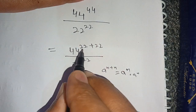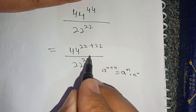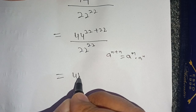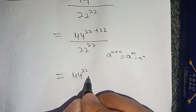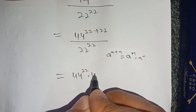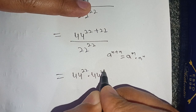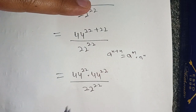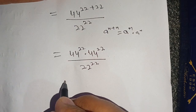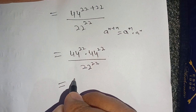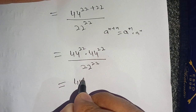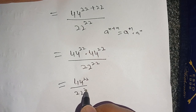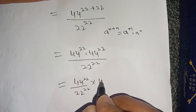Here a is 44 and n is 22. Using this identity in the numerator we get 44 raised to power 22 times 44 raised to power 22, divided by 22 raised to power 22. We can write it as 44 raised to power 22 divided by 22 raised to power 22, times 44 raised to power 22.